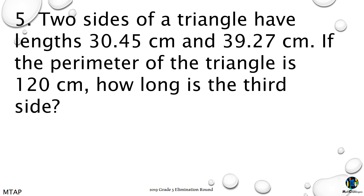5. Two sides of a triangle have lengths 30.45 cm and 39.27 cm. If the perimeter of the triangle is 120 cm, how long is the third side?